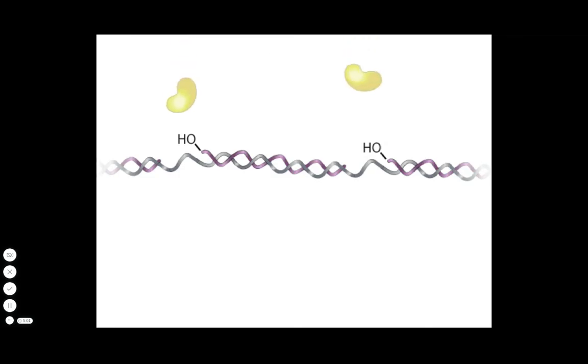Another enzyme called DNA polymerase 1 uses the 3' OH group of the adjacent Okazaki fragment to fill in the large gap with DNA nucleotides.